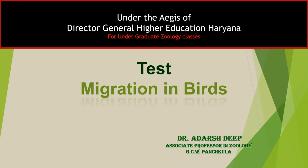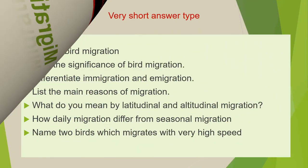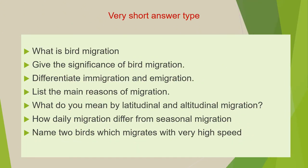According to Marx, these questions are divided into three categories. The first category of questions are very short answer type questions, which will cover the first compulsory question of your paper. And these questions you have to answer in two to three lines.